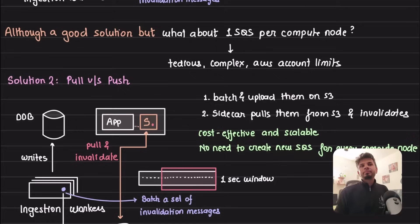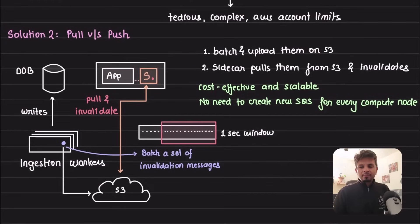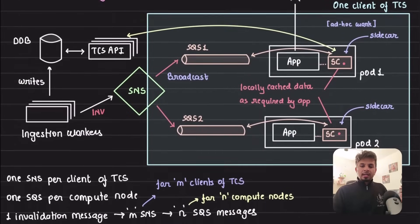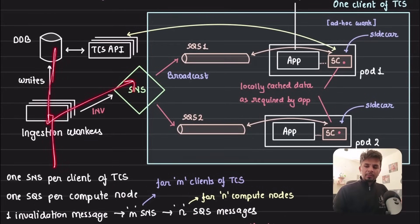It's tedious, it's complex, and you will very soon hit AWS account limits and whatnot. So how do we solve it? Here we'll go with the framework of opposites: push versus pull. Up until now, the data got updated and you push the message to SNS, SNS pushes to SQS, and the sidecar pulls from it. You are proactively pushing the invalidation to be done as soon as possible. Instead of push, can we pull?